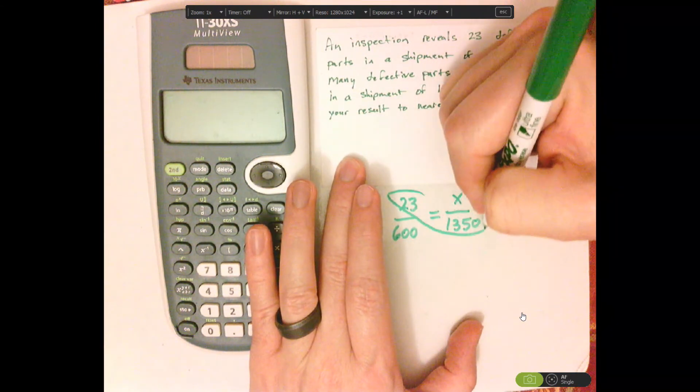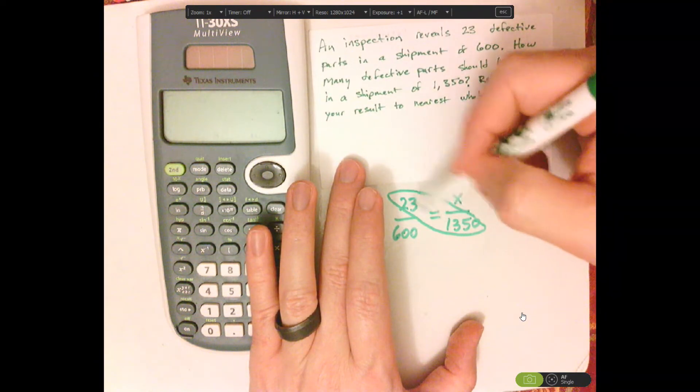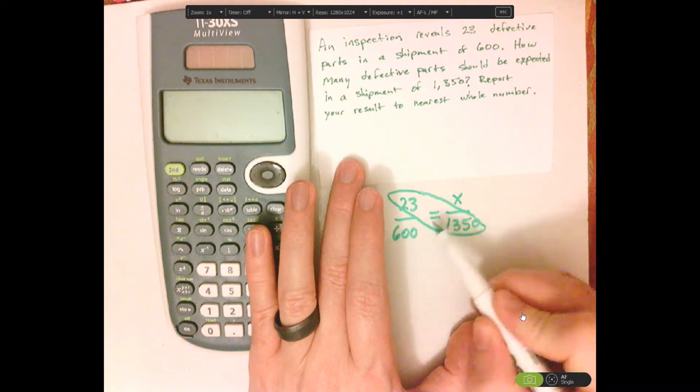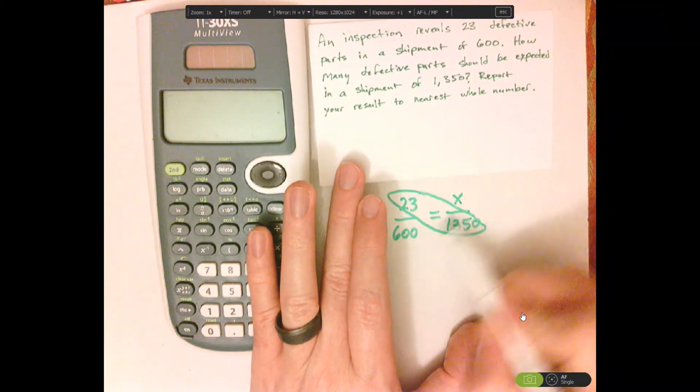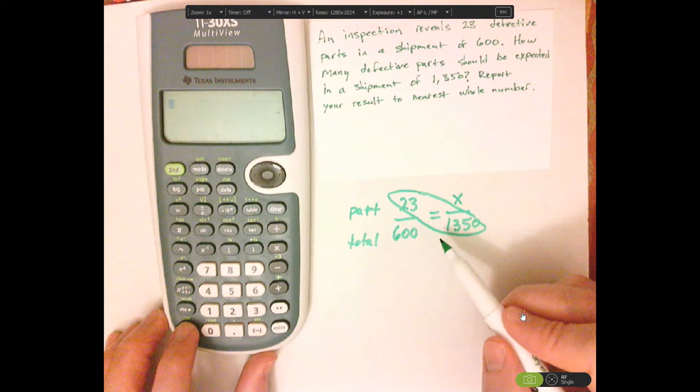You're going to cross-multiply the numbers. Whatever is diagonal to the variable, or the X, that's what you're going to be dividing.